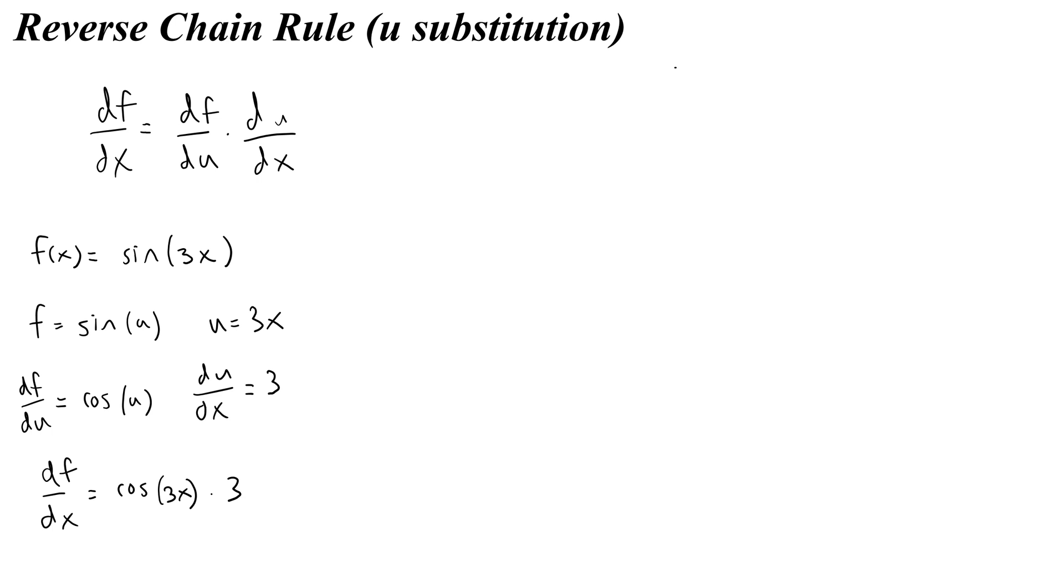Now the reverse chain rule, it works like this. Let's say you needed to find the integral of 3 cosine 3x, which is exactly what we just did, with respect to x. If we do this in reverse, what we would do is we would say, well 3x is u, and the derivative of u with respect to x is 3.